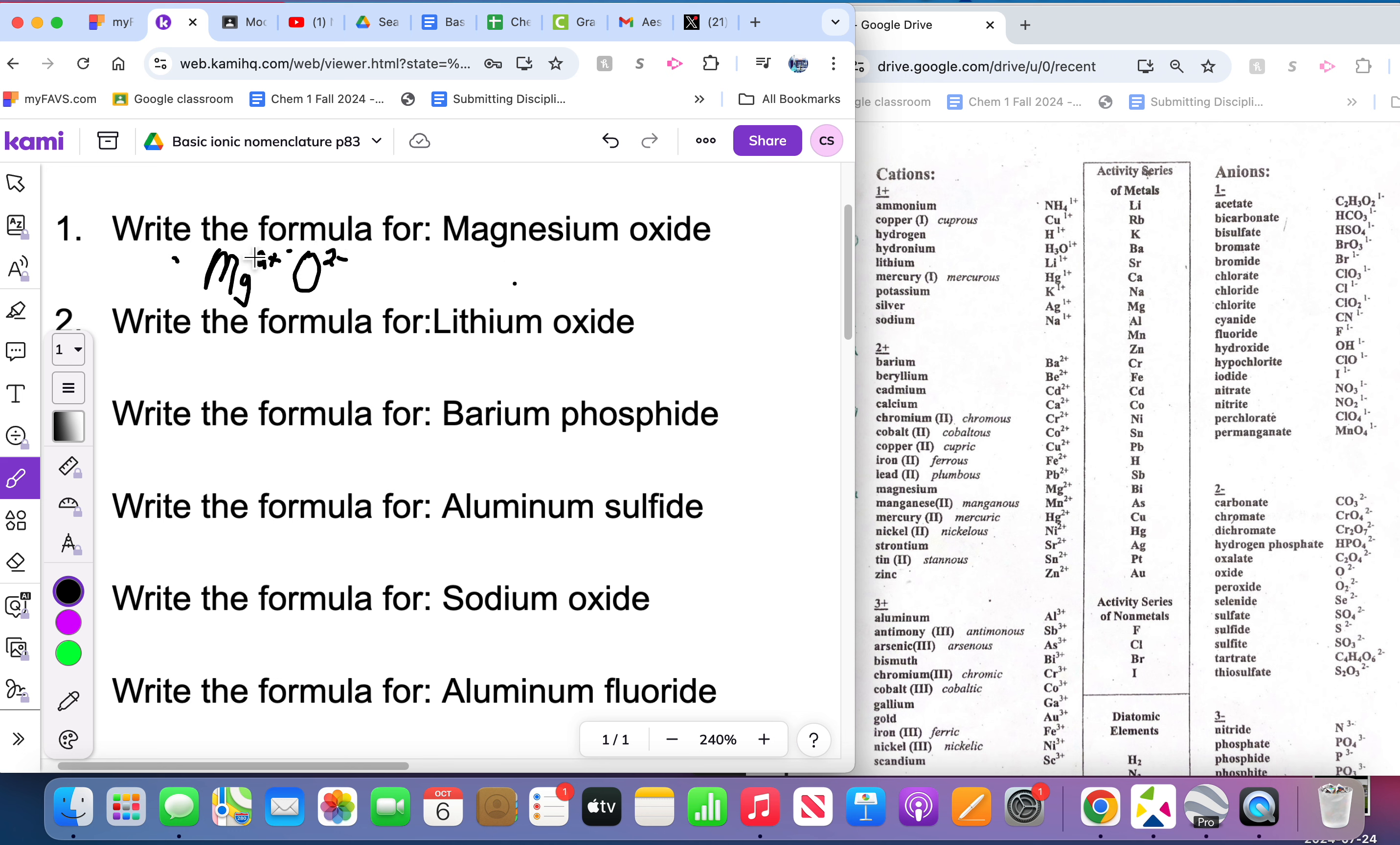Now if the positive charges already cancel out the negative charges, that means you just need one of these will cancel out one of these. If the charges already cancel each other out, you just need one of each. Then you just rewrite it and chemists leave off one, so MgO, that would be the correct formula.